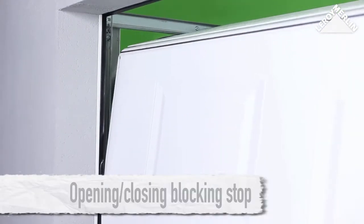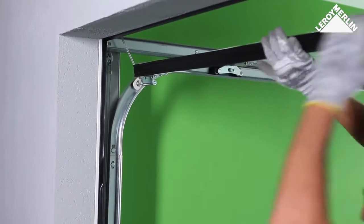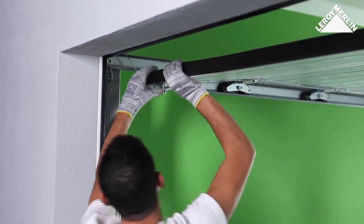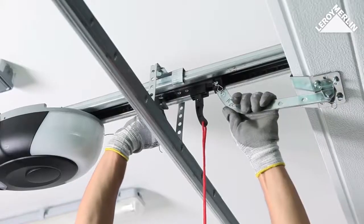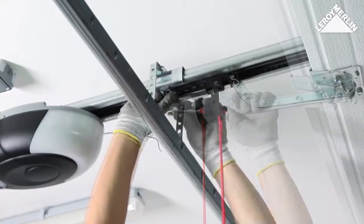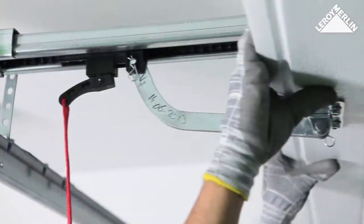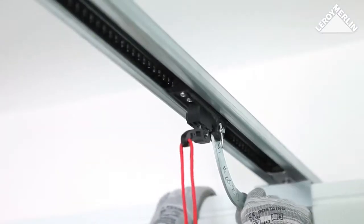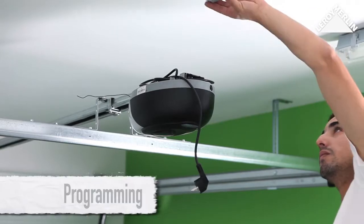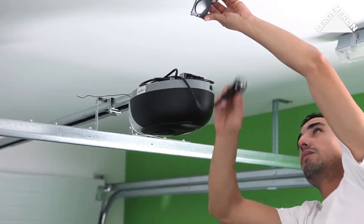Opening, closing, blocking stop: Open the door by hand to identify the fully open position and install the blocking stop. Position the carriage onto its chain sprocket and clip it in place above.